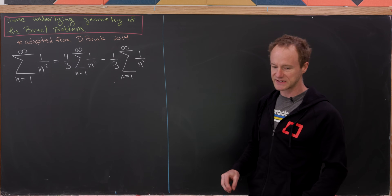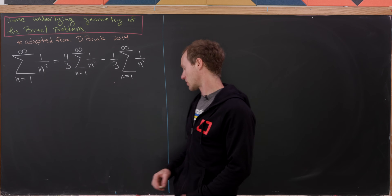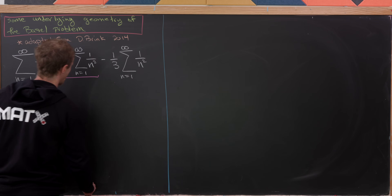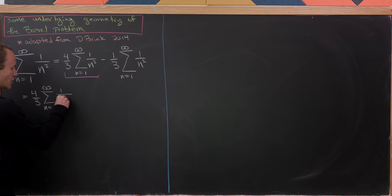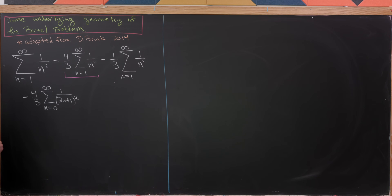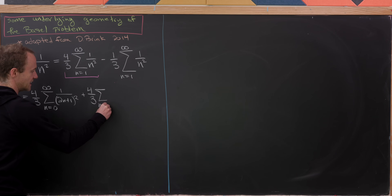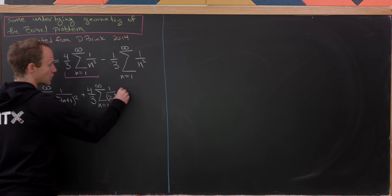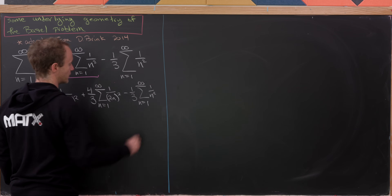That may seem silly, but we're going to use this to split the first term — four-thirds of the sum of the reciprocal of the squares — into odd and even parts. That gives us four-thirds times the sum from n=0 to infinity of 1/(2n+1)², which are the odd parts, plus four-thirds times the sum from n=1 to infinity of 1/(2n)², the even parts. Then we subtract one-third times the sum from n=1 to infinity of 1/n².